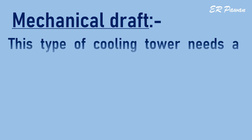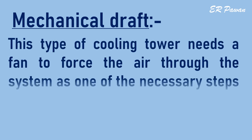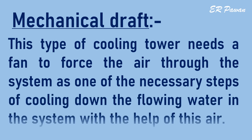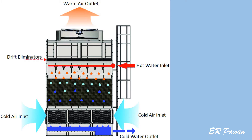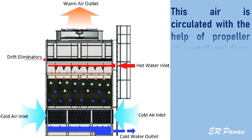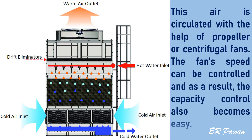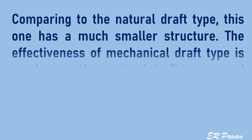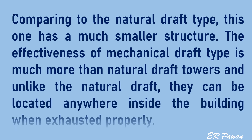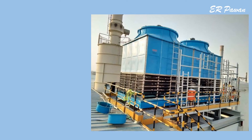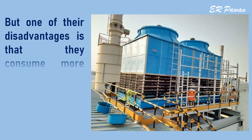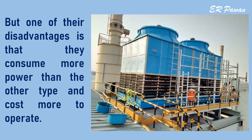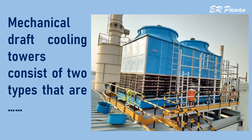Mechanical draft: this type of cooling tower needs a fan to force the air through the system to cool down the flowing water. Air is circulated with the help of propeller or centrifugal fans. The fan speed can be controlled, making capacity control easy. Compared to the natural draft type, this one has a much smaller structure. Mechanical draft towers are more effective than natural draft towers and can be located anywhere inside the building when properly exhausted, but they consume more power and cost more to operate.